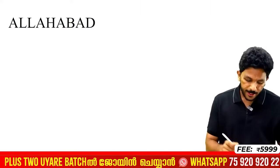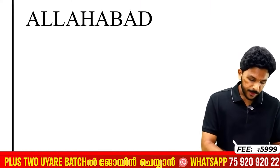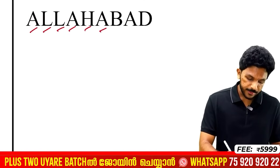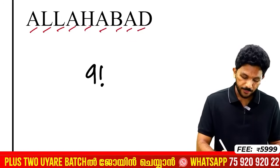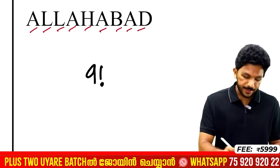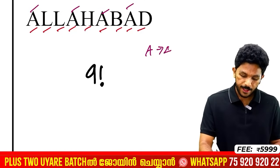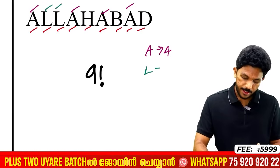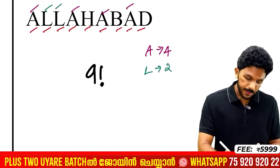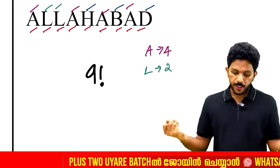Now let's look at ALLAHABAD. Counting: A, L, L, A, H, A, B, A, D — that is 9 letters, so we have 9 factorial. The repetitions are: A appears 4 times, L appears 2 times. H, B, and D each appear once.